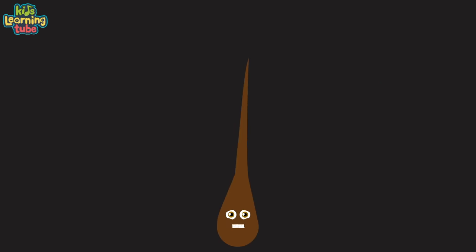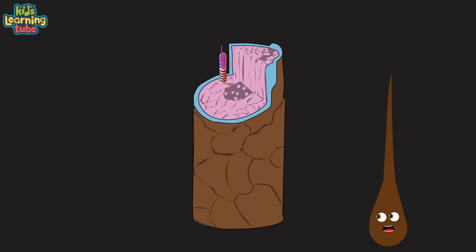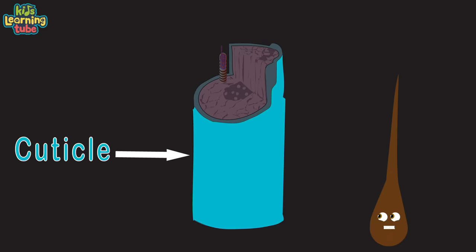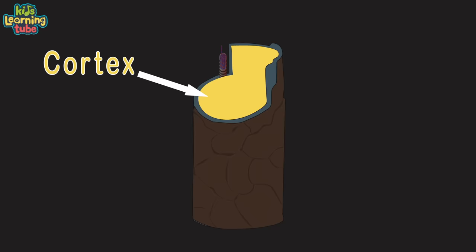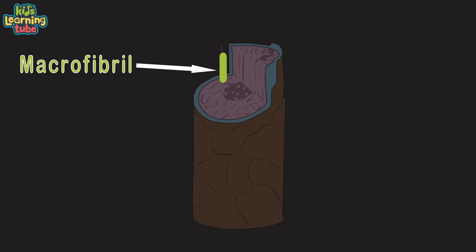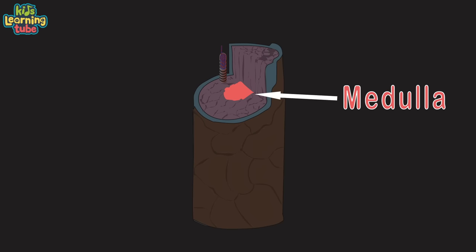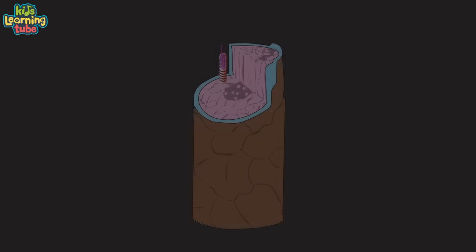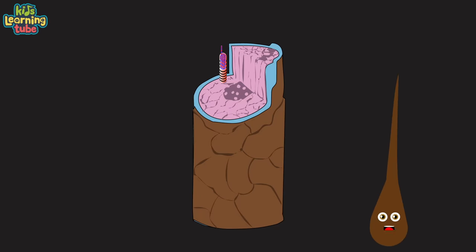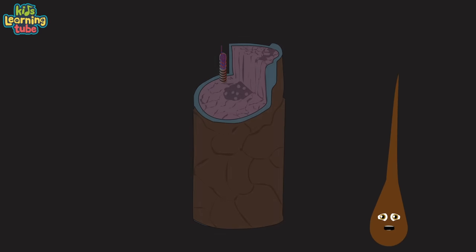A hair is made up of tough protein called keratin. Here are the parts of the shaft of hair. The outer part you see is called the cuticle. Here's the cortex, which holds these fibers. Here's a macrofibril and microfibril protein fiber structure. In the center's the medulla in large thick hairs.